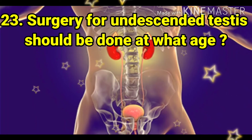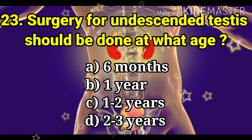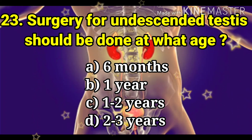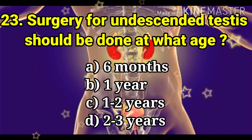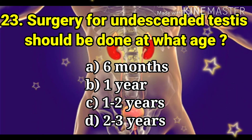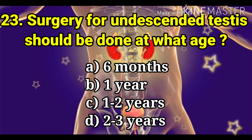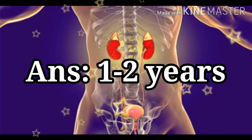The next question: surgery for undescended testis should be done at what age? The options are six months, one year, one to two years, and two to three years. The answer is one to two years.